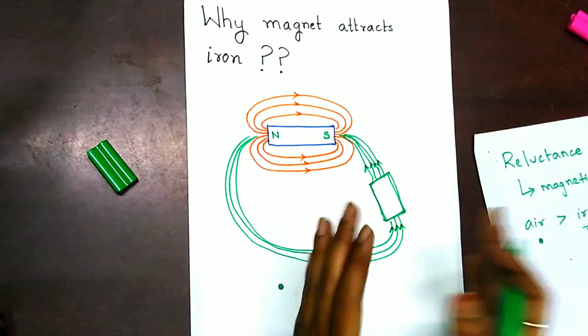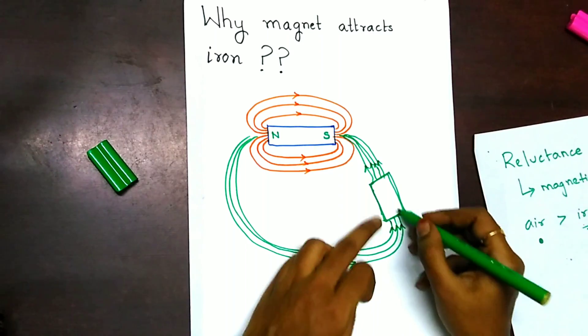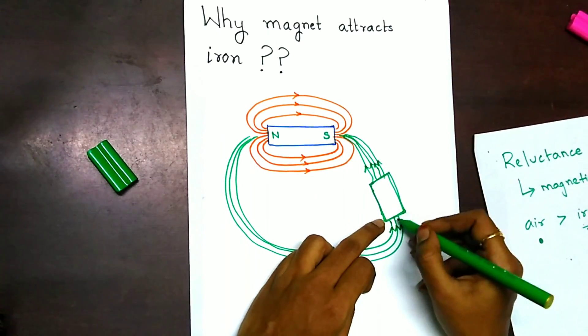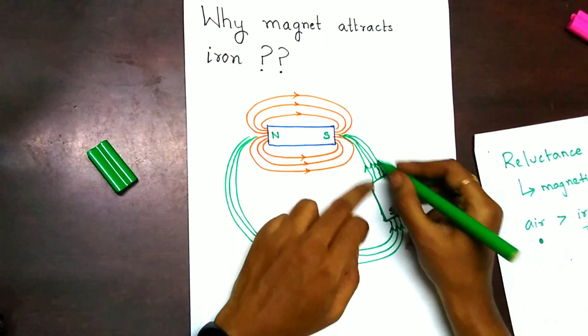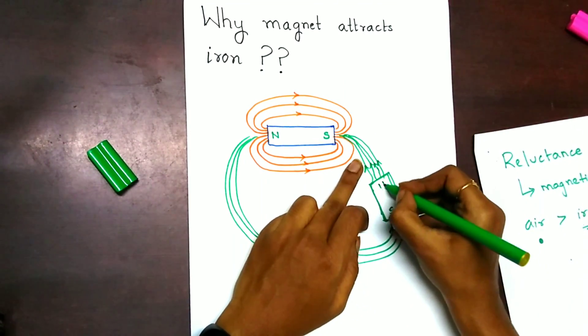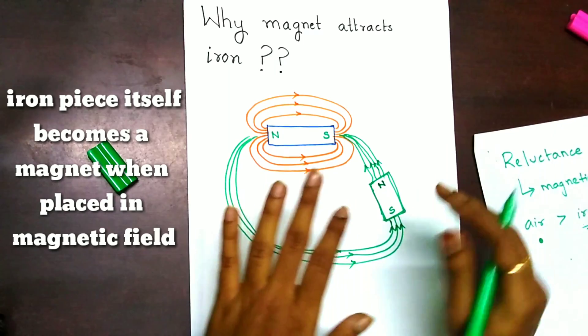That is, we can consider like this. Since the magnetic lines of force are entering this pole, this is considered to be south. And since the magnetic flux is leaving here, this is assumed as north pole.